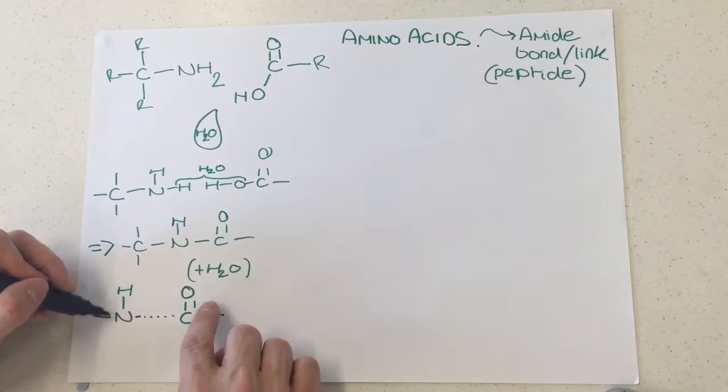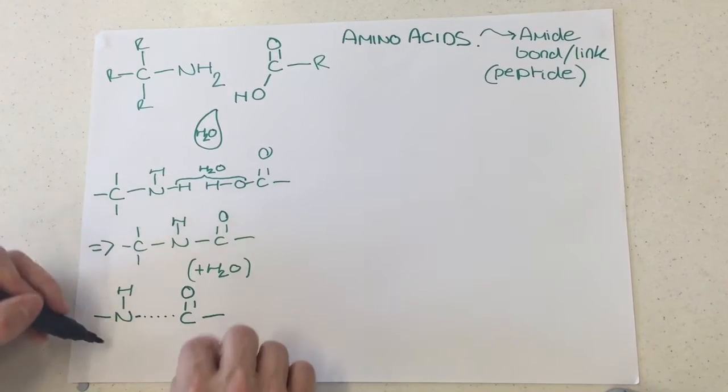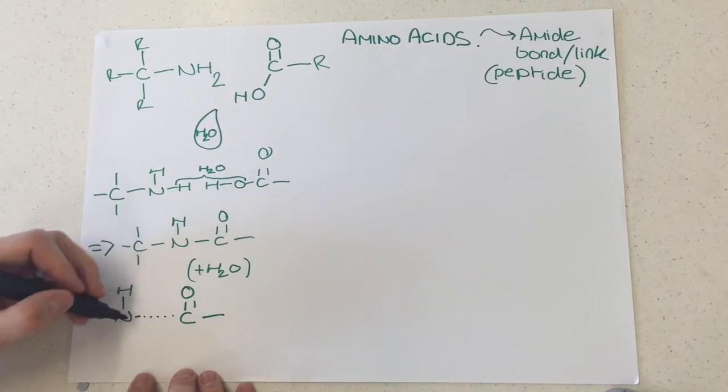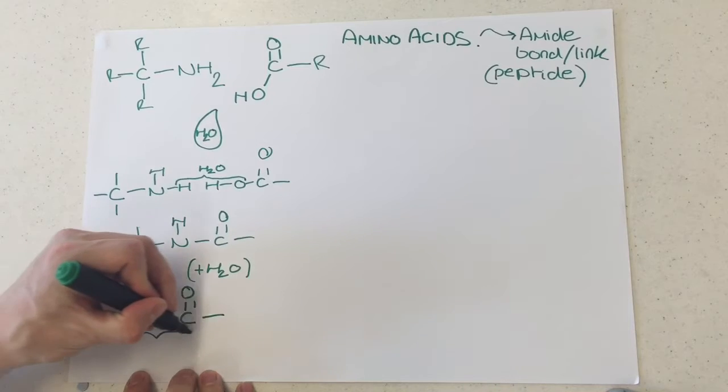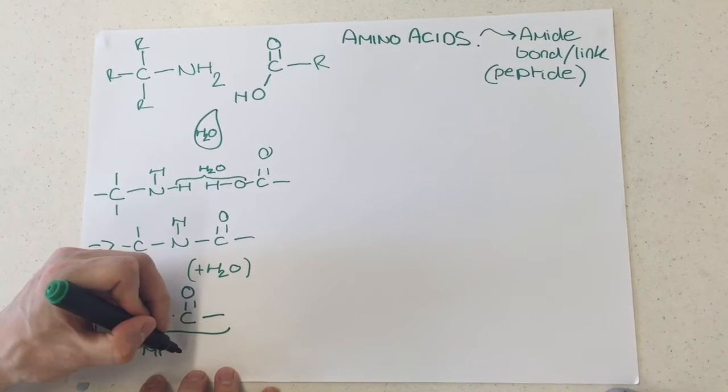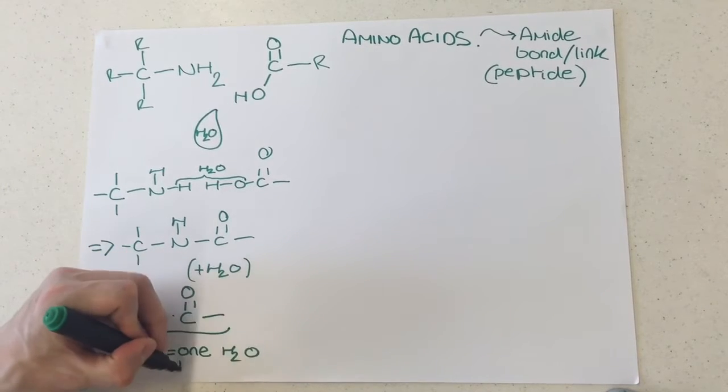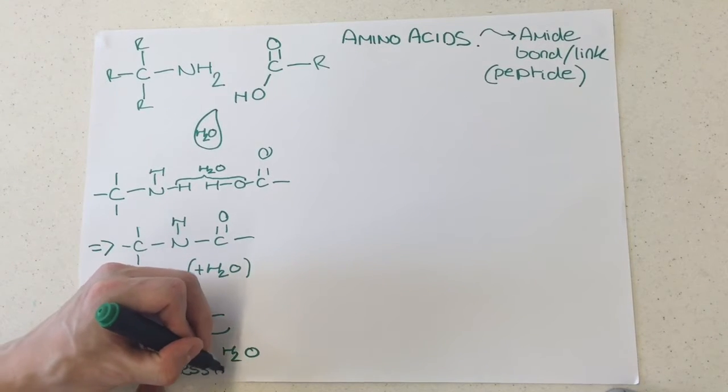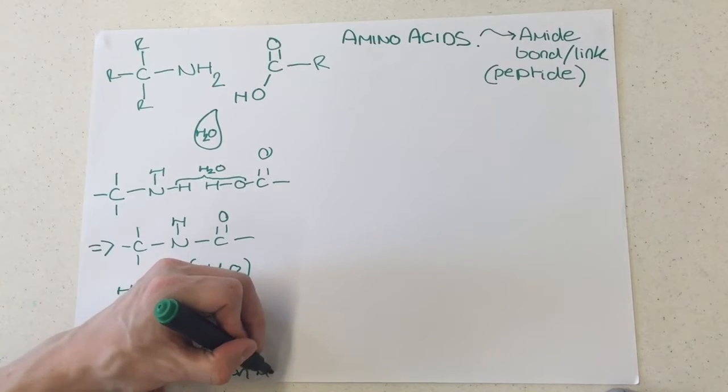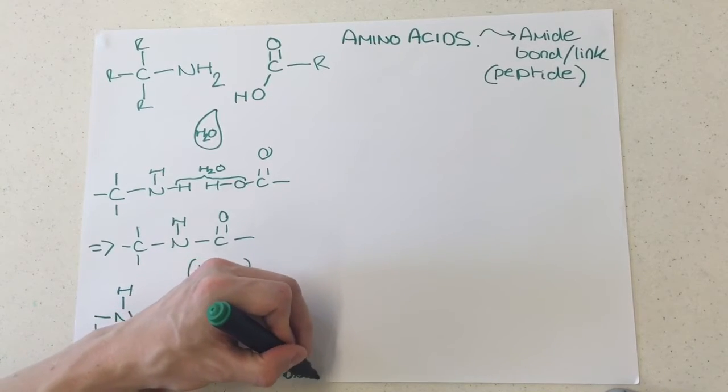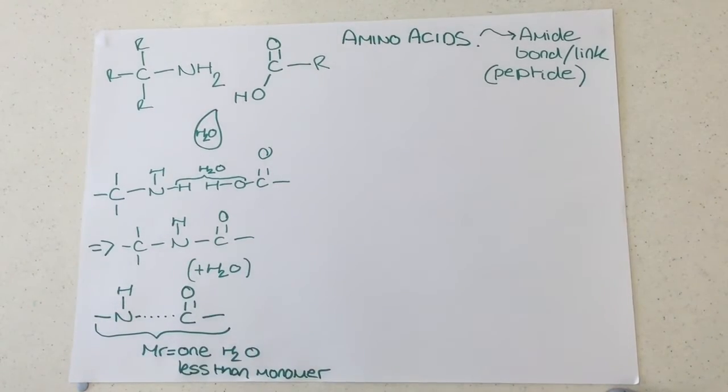So you could see we've got these sort of open bonds here, sort of these dead arms just hanging off the side. And the MR of this would be one H2O less than the monomer. So it's a good way of trying to spot certain patterns with the subject. It's a good way of seeing if you've got the right answer at the end.